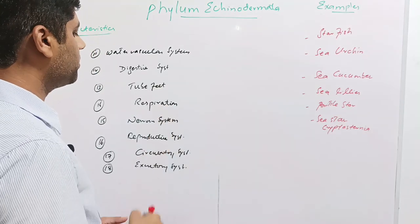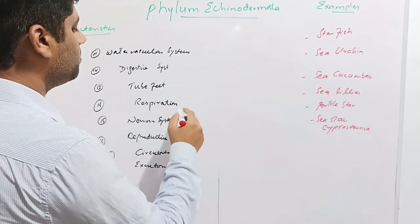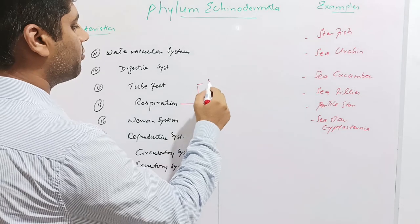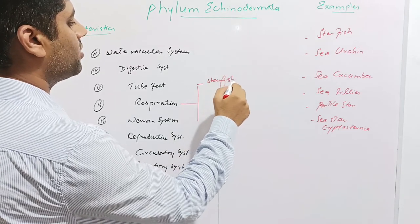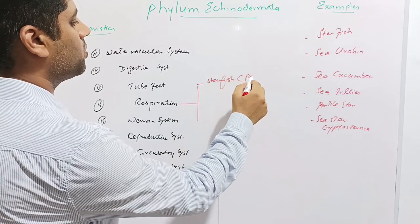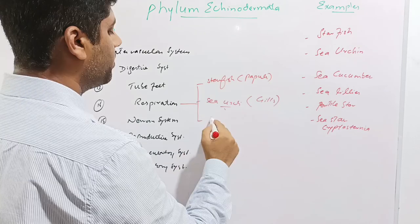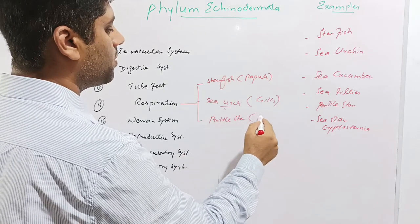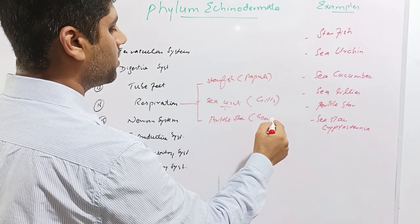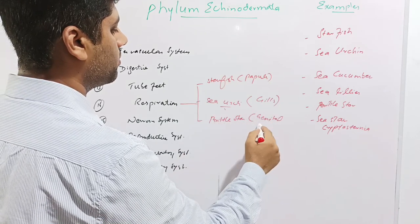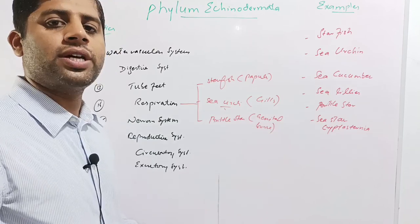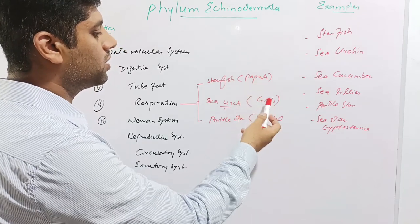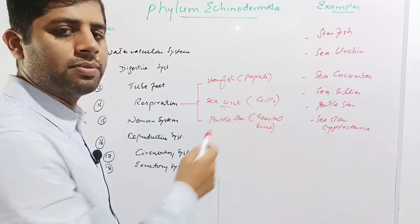Echinoderms bear different respiratory organs. In the case of starfish, respiration occurs through papulae which are attached to the tube feet. The brittle star respires through genital bursa. The organs of respiration in Echinoderms include papulae, gills, and genital bursa.